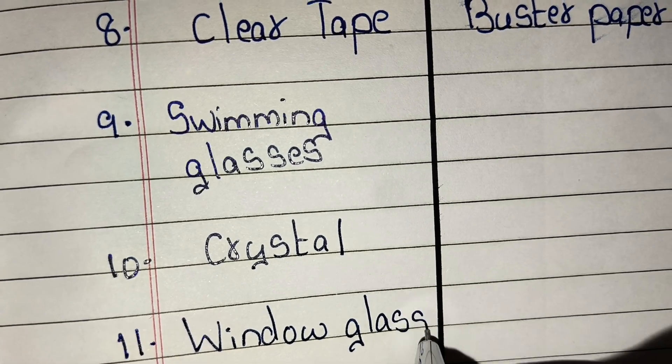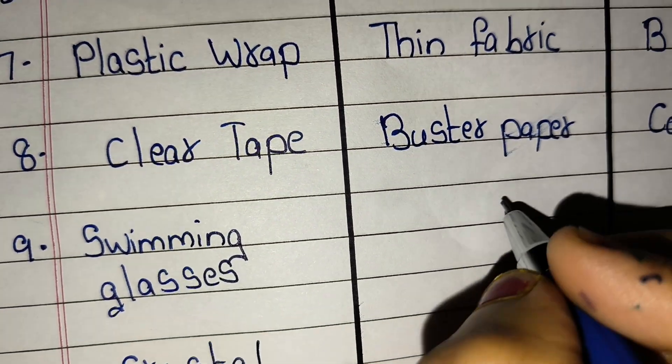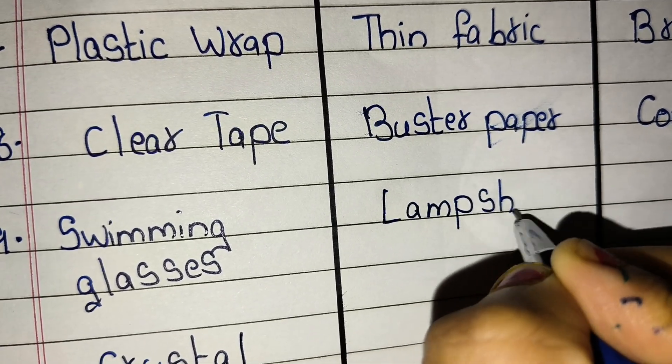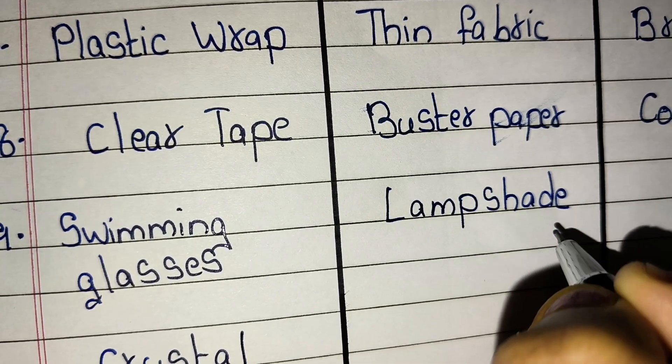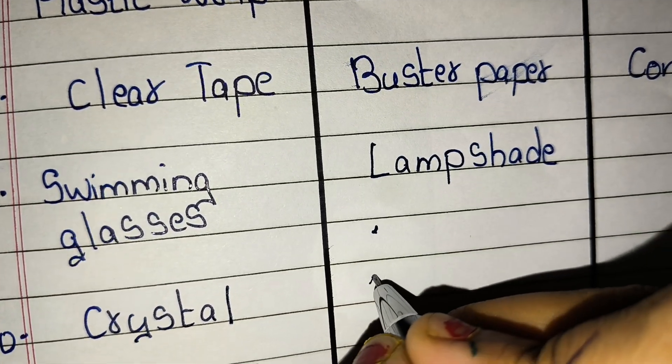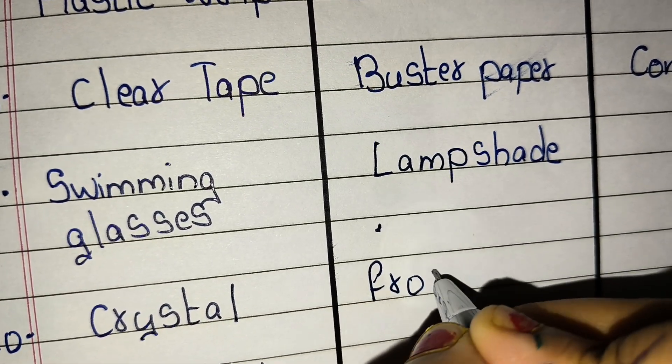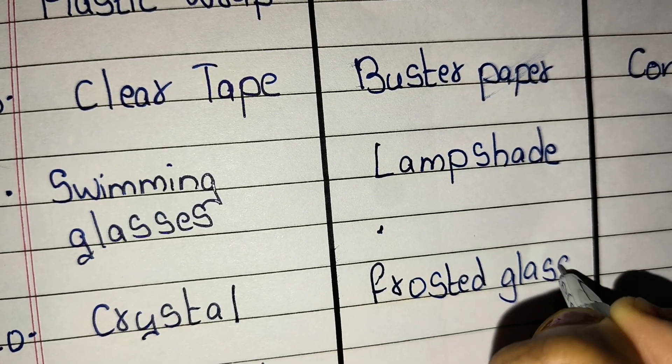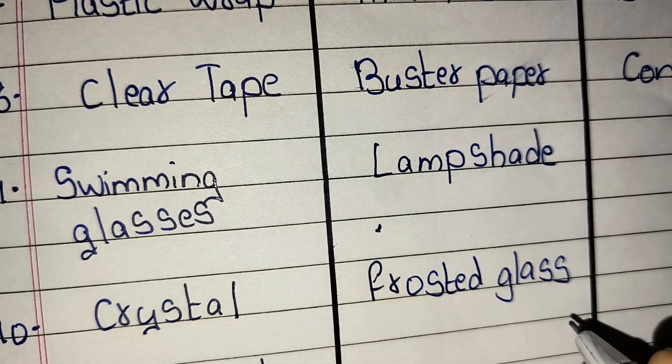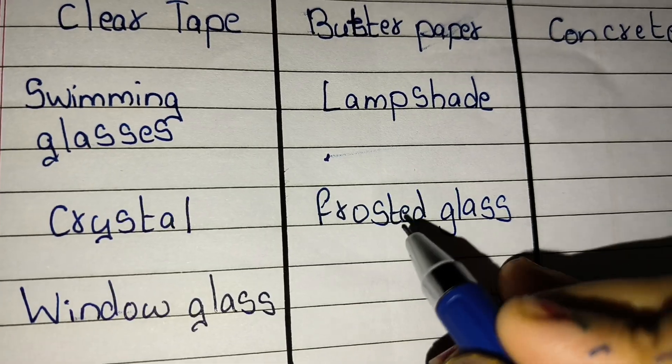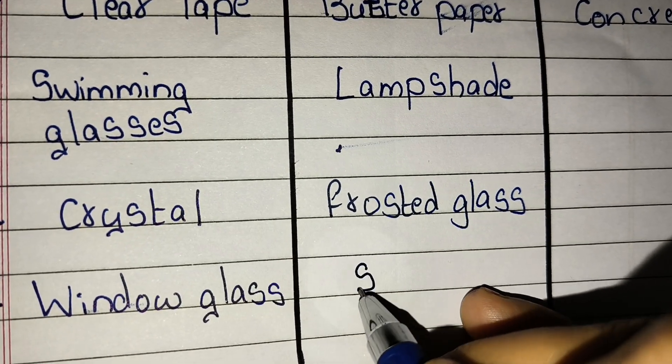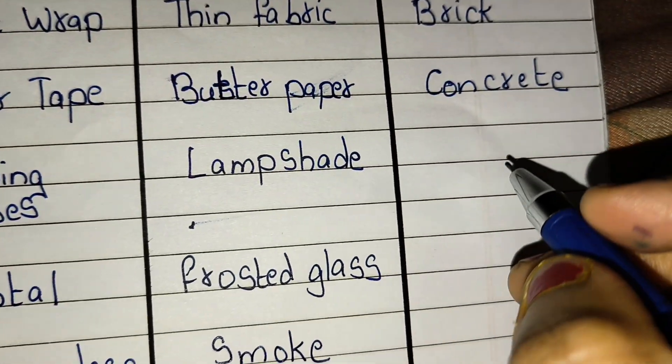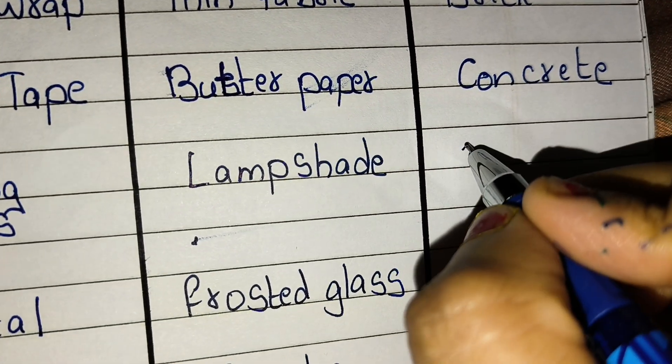Window glasses. Example of translucent: lampshade, frosted glass, smoke.